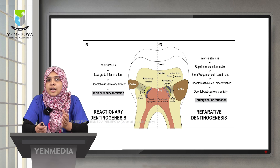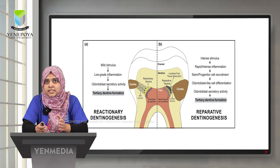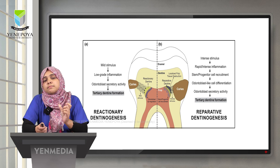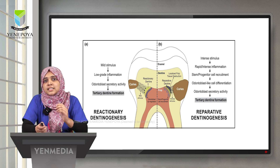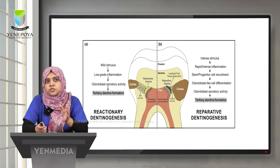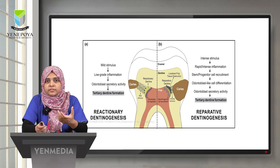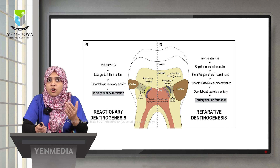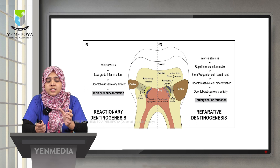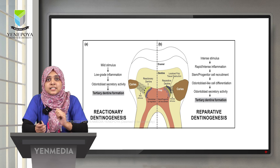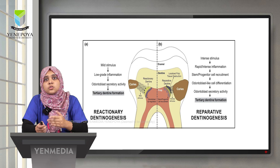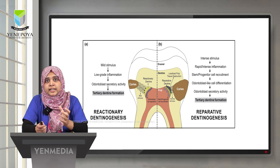Tertiary dentine formation occurs through either reactionary or reparative dentinogenesis. In reactionary dentinogenesis, a mild stimulus causes low-grade inflammation that injures but does not kill odontoblasts, increasing their secretory activity and leading to tertiary dentine formation. In reparative dentinogenesis, an intense stimulus causes rapid inflammation and odontoblast destruction; stem or progenitor cells are recruited, differentiate into odontoblast-like cells, and then begin secretory activity leading to tertiary dentine formation.